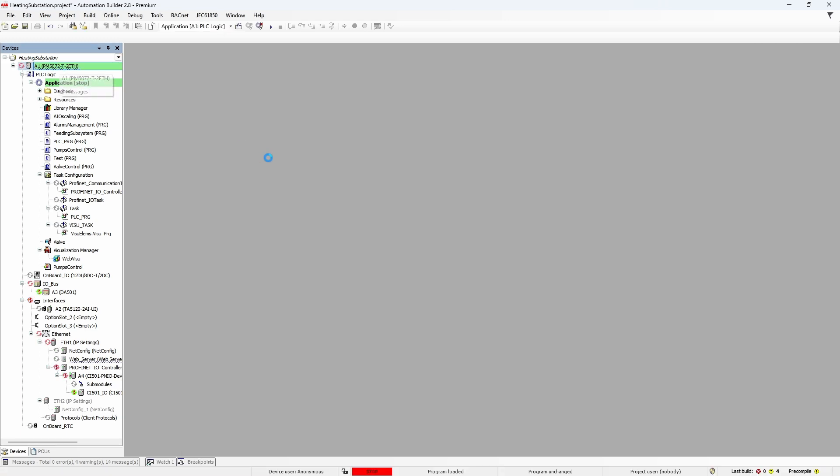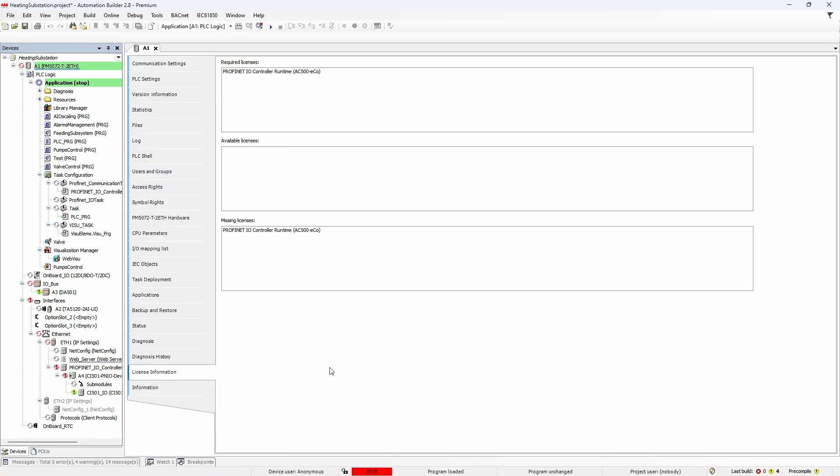Now, go to PLC Settings and then to License Information tab. And here, it becomes clear that the PLC lacks ProfinetIO controller runtime license. Runtime license is a type of license which is allocated to a specific PLC unit and allow us to run a certain feature, ProfinetIO controller in our case.